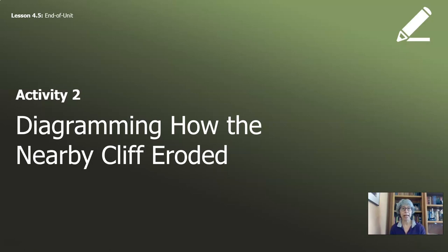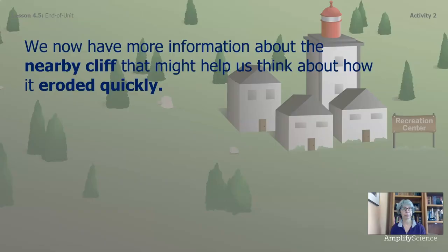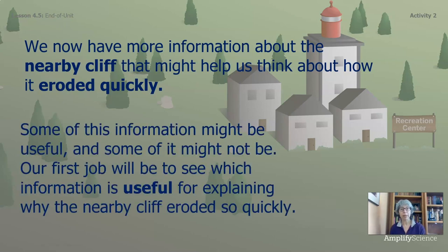This is the last activity in part one of the last lesson. Let's do a little bit of diagramming. We created diagrams of how this cliff could have eroded overnight, but now we have new ideas about how this could have happened. We now have some more information about the nearby cliff that might help us think about how it eroded quickly.